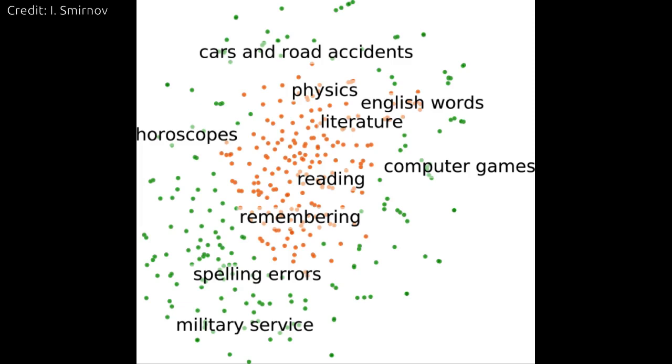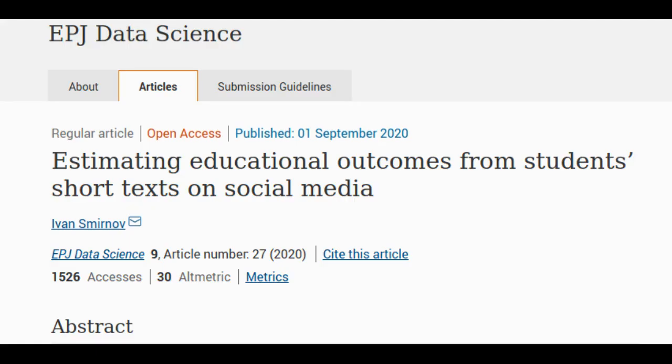At the same time, posts can be quite short — even tweets are quite informative. An article detailing the study's results was published in the journal EPJ Data Science.